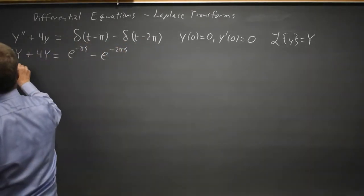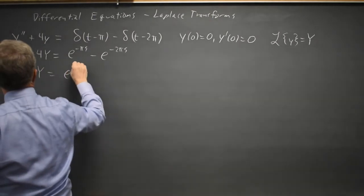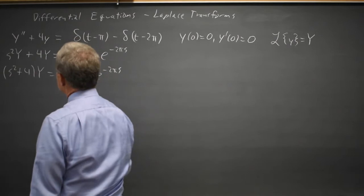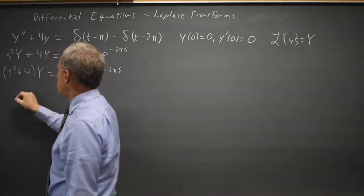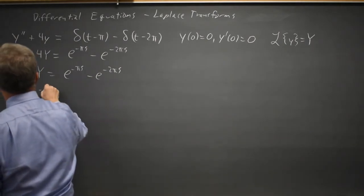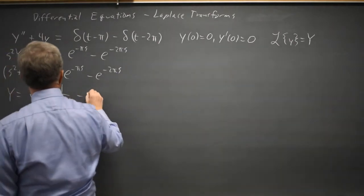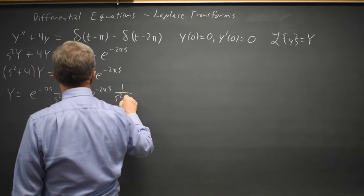So I have s squared plus 4 times uppercase Y equals e to the negative pi s minus e to the negative 2 pi s. I notice that this is my characteristic polynomial, so uppercase Y, the transform of the solution, is e to the negative pi s times 1 over s squared plus 4 minus e to the negative 2 pi s times 1 over s squared plus 4.